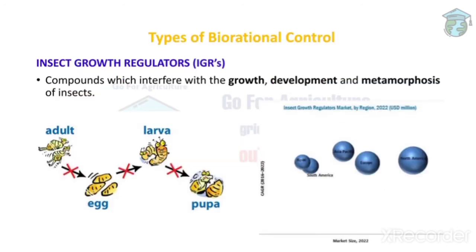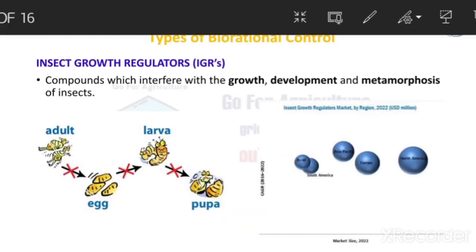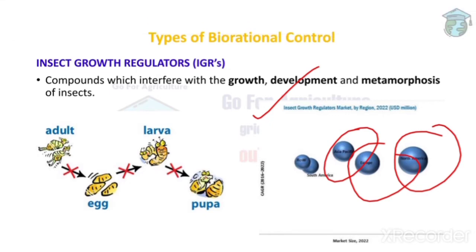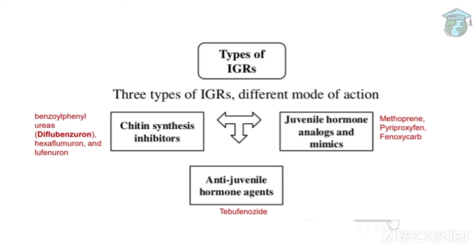Next are the types of bio-rational insecticides. The first type is insect growth regulators, or IGR. Insect growth means development stages, and regulator means to regulate - so anything that controls the growth and development of insects is called an insect growth regulator. The market for bio-rational insecticides is largest in North America, then Europe, then Asia Pacific. IGRs are of three types: chitin synthesis inhibitors, juvenile hormone analogues and mimics, and anti-juvenile hormones.